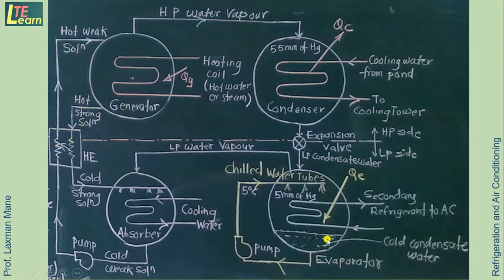In the evaporator a vacuum is maintained of 5 mm of Hg pressure. So at this pressure water as a refrigerant, i.e. chilled water at 5 degree Celsius, is sprayed over the secondary refrigerant, i.e. cooling water which is going to the air conditioning system.